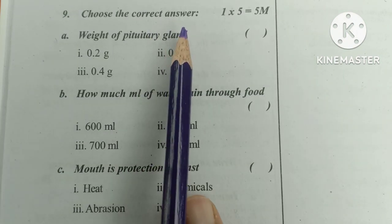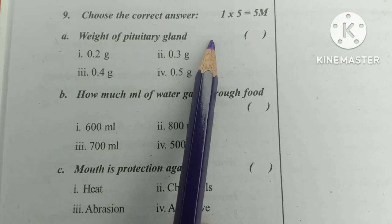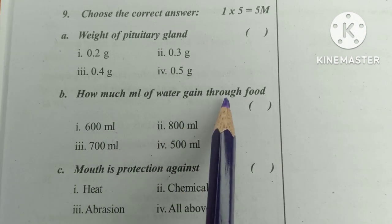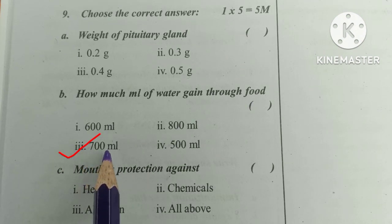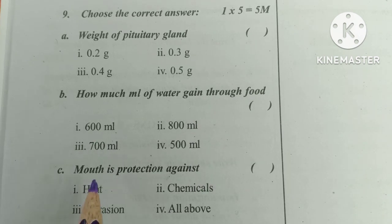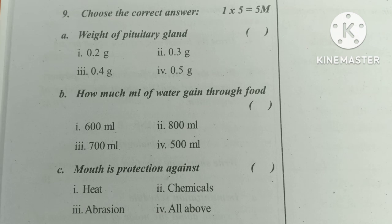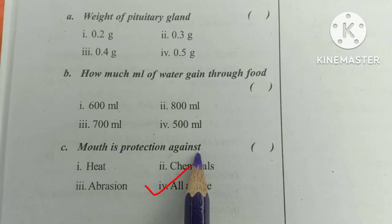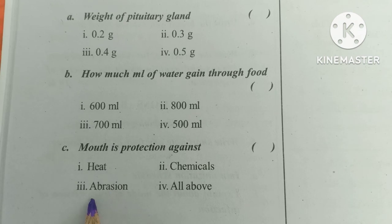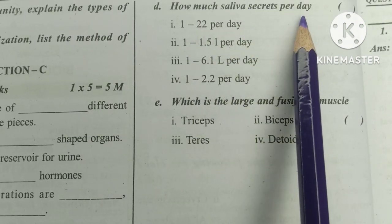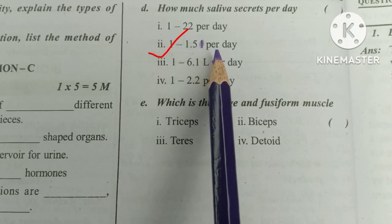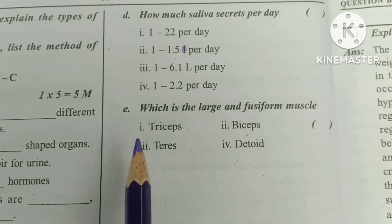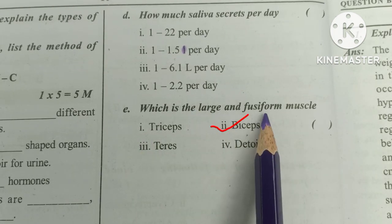Number 9: Choose the correct answer. A: Weight of the pituitary gland is 0.5 gram. B: How much water is gained through food? Answer: 700 ml. C: The mouth provides protection against heat, chemicals, abrasion — answer is all of the above. D: How much saliva is secreted per day? Answer: 1 to 1.5 liters. E: Which is the large fusiform muscle? Answer: Bicep — bicep is the large fusiform muscle.